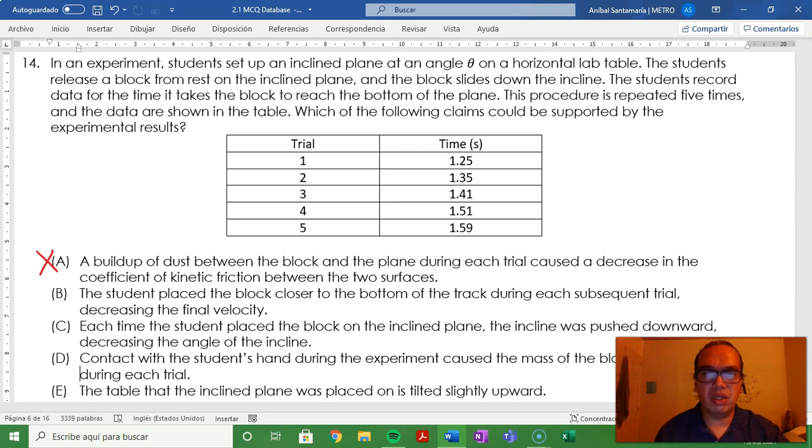B. The student placed the block closer to the bottom of the track during each subsequent trial, decreasing the final velocity. Once again, less displacement implies less time of travel, not more.